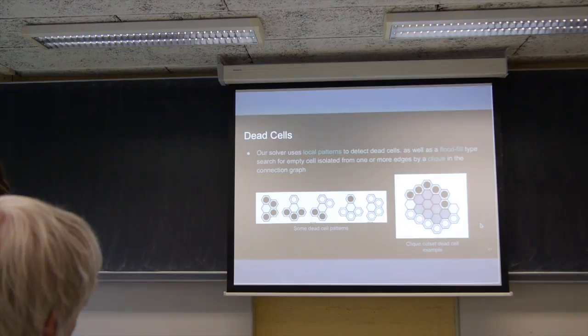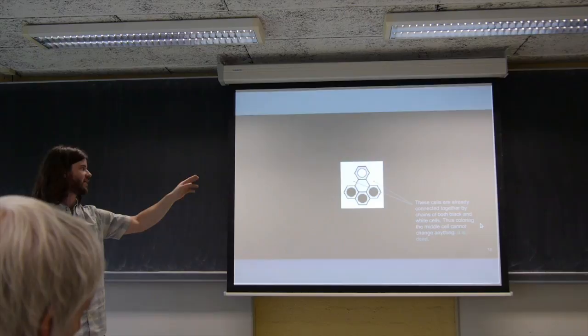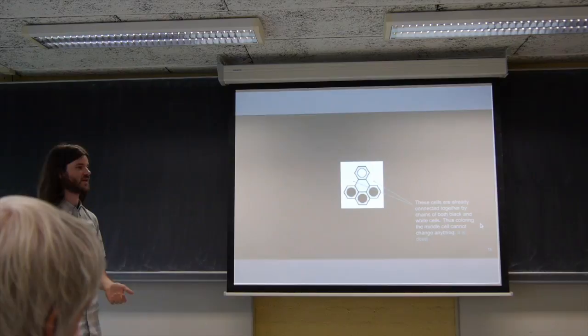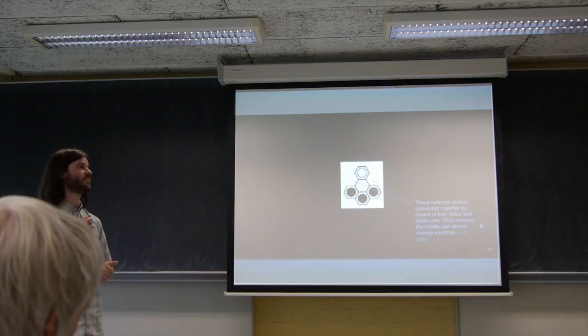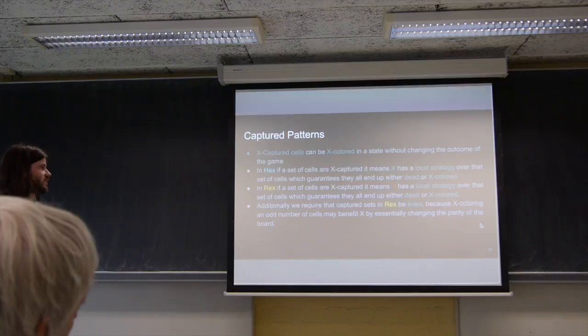So I'll give a short example of one particular one. So the middle cell here is dead because basically all its neighbors are already connected by both chains of black and white cells. So no matter what color the middle one is, it's not going to change the connectivity of the board at all because anything that was connected, if its neighbors were connected already, then, sorry, its neighbors are connected already. So no matter what color it is, they're still going to be connected and it's not going to change anything.